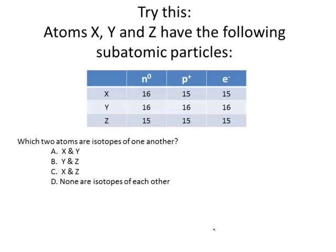They have the following subatomic particles: number of neutrons listed, number of protons listed, and number of electrons listed. Okay, so look at those three and say which two atoms are isotopes of one another. Alright, think about that.